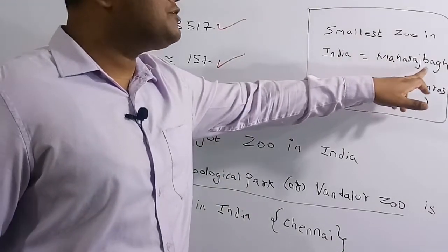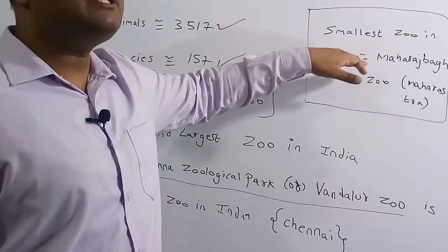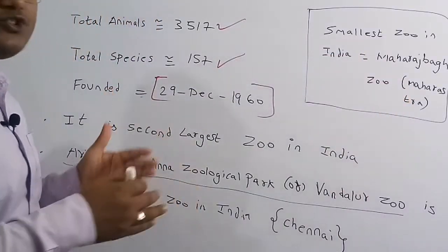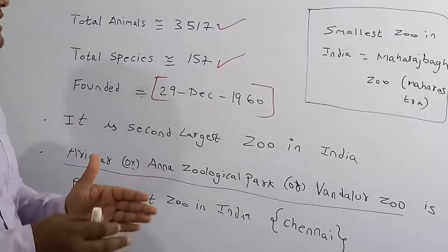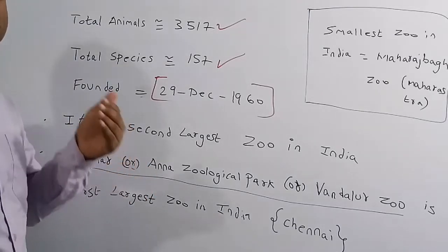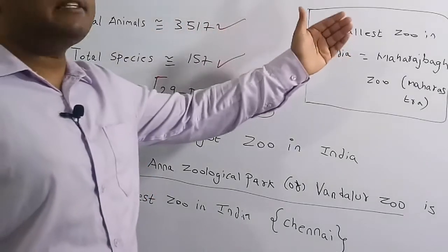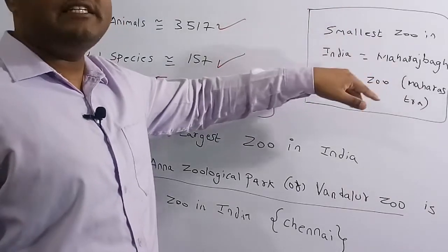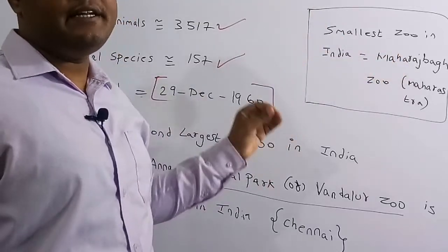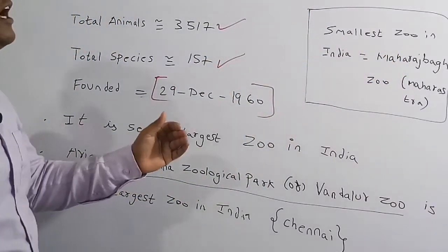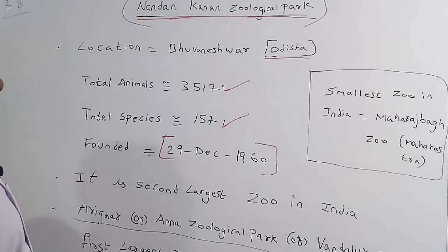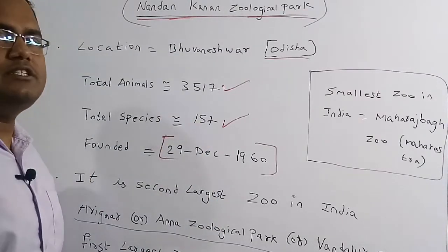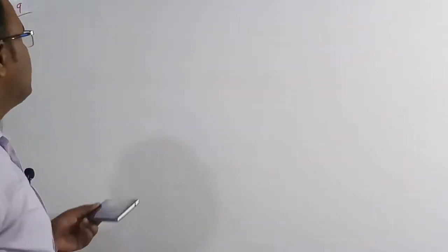The smallest zoo in India is Maharaj Bagh Zoo, which is located in Maharashtra. So: the largest zoo is in Chennai, the second largest is in Odisha (Nandan Kanan), and the smallest zoo in India is in Maharashtra. These three names are important and frequently asked in competitive examinations.